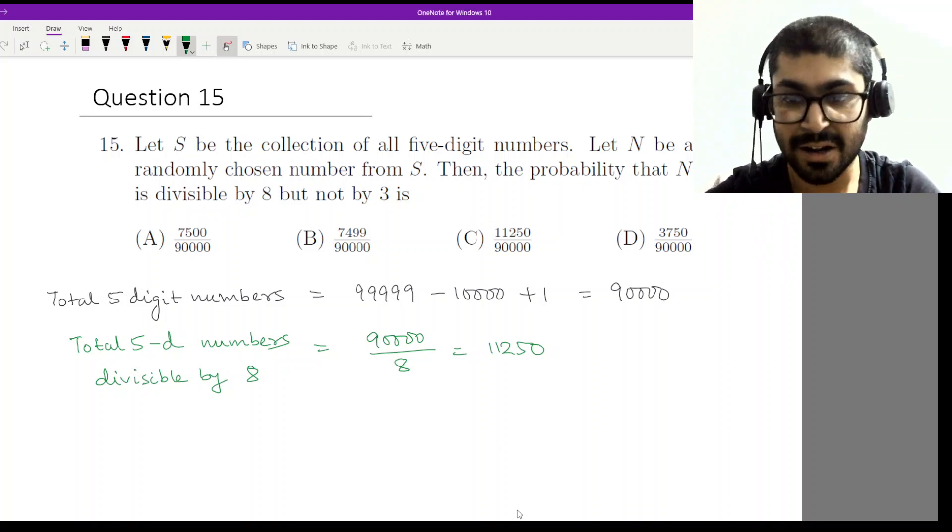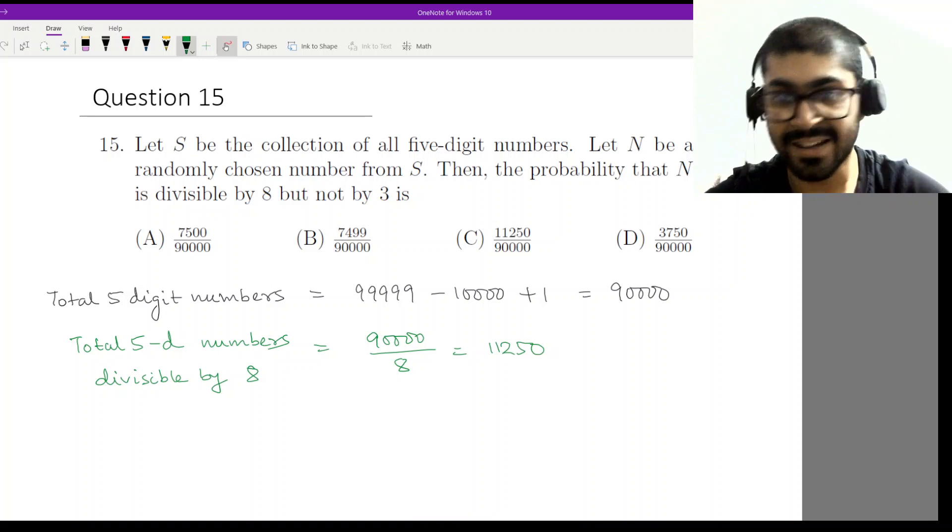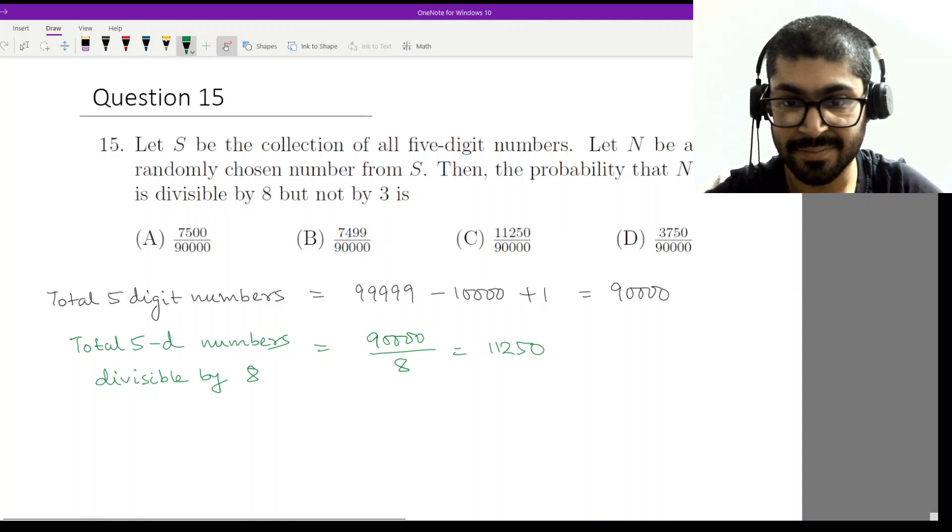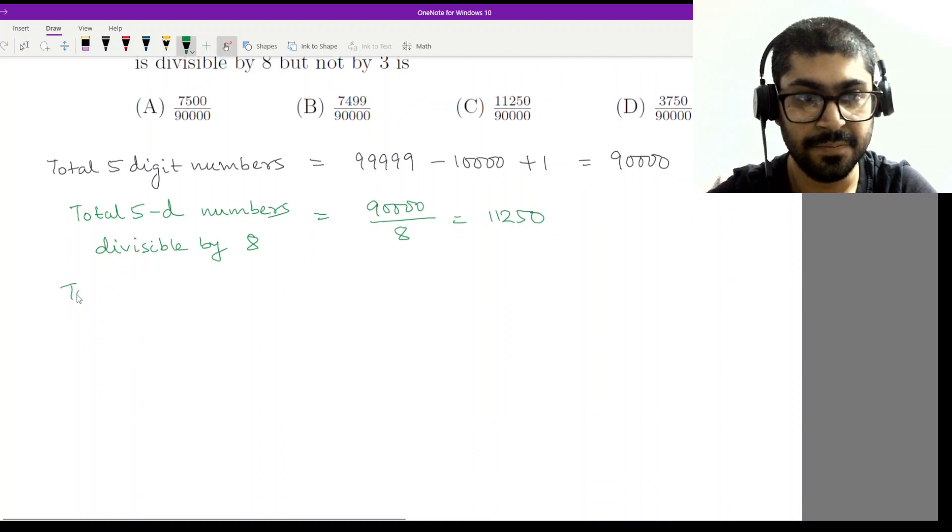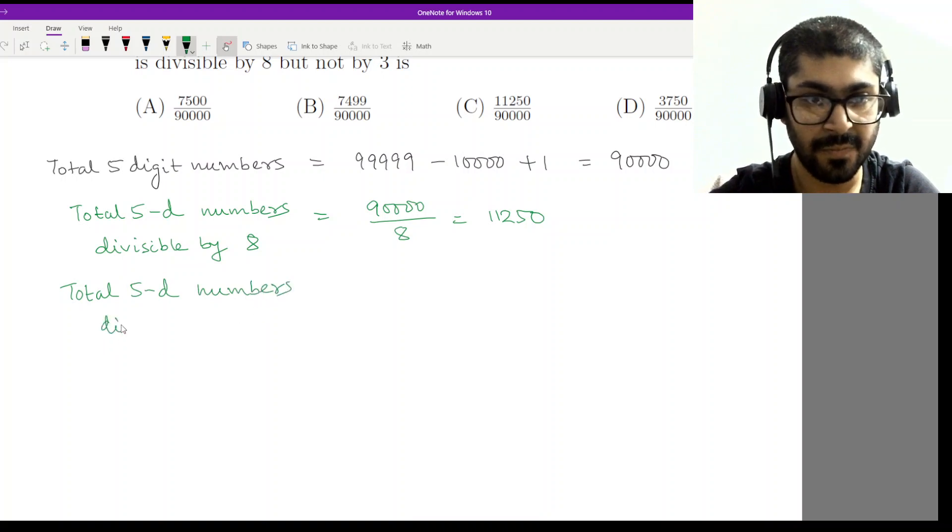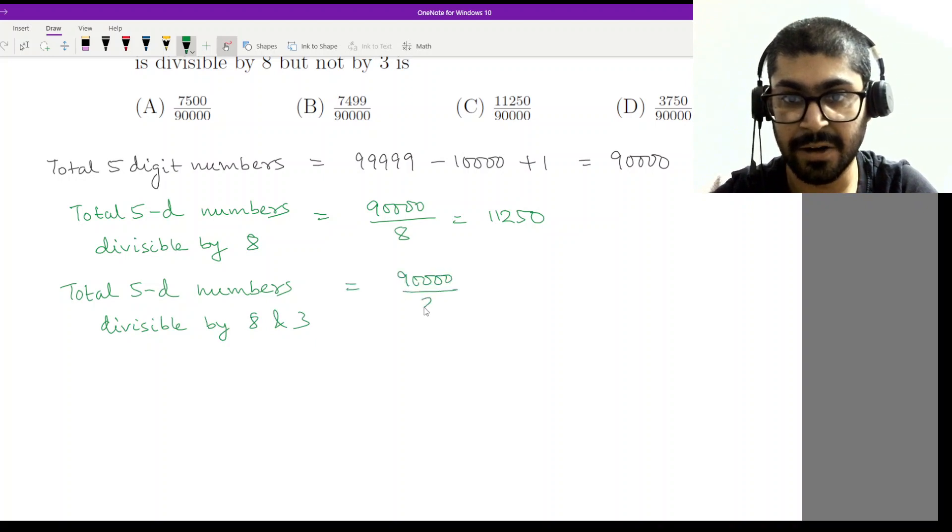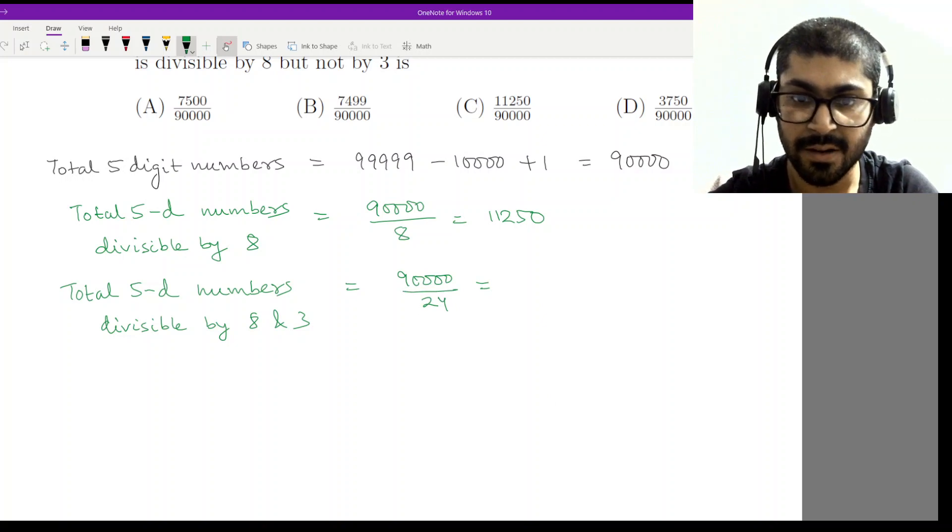We have to calculate the number of five-digit numbers that are divisible by 8 and 3, which means divisible by 24. Then we have to subtract those two. Numbers divisible by 8 and 3: this will be 90,000 divided by 24, which would give me a value of 3,750.